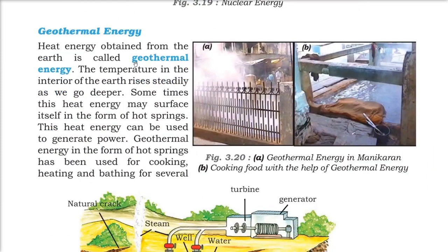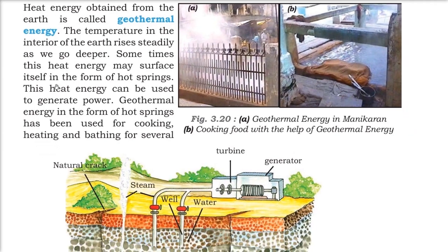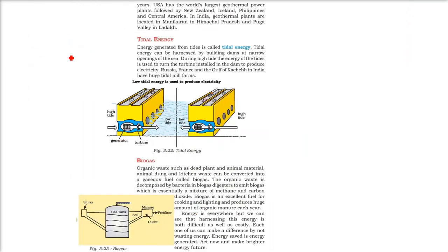Here is a picture of geothermal energy at Manikaran, where food is being cooked with the help of geothermal energy. Geothermal energy is heat energy obtained from the earth — the earth's crust is thousands of degrees centigrade. Sometimes this heat surfaces as hot springs, and this heat energy can be used to generate power. It has been used for cooking, heating, and bathing for several years. USA has the world's largest geothermal power plants, followed by New Zealand, Iceland, Philippines, Central America, and India. In India, we have Manikaran in Himachal Pradesh and Puga Valley in Ladakh.